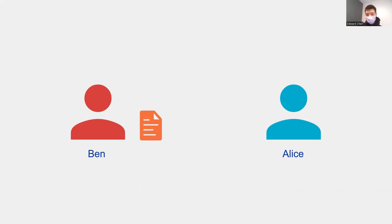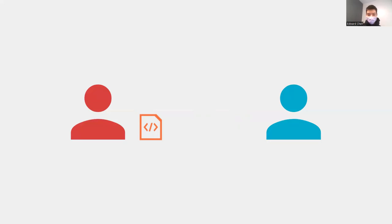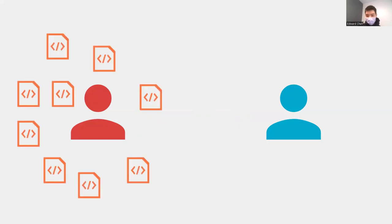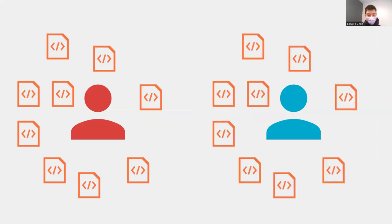Now imagine that Ben were a programmer, not just a writer. In programming, when you're making a website, you have all sorts of HTML and CSS files — a homepage, a profile page, a team page, an about page. So Ben has a whole host of files, and because he and Alice are working on the same project, Alice has a whole host of files as well.